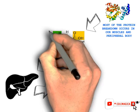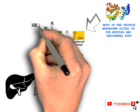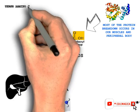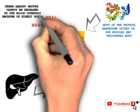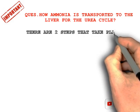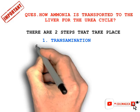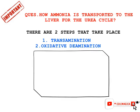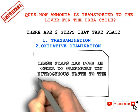Now, these nitrogen-containing amino groups cannot be released into our blood directly, because free ammonium ions are highly toxic for our body. So there exists a way to transport this nitrogen waste to the liver without converting it into its ionic form. This is a very important concept: how ammonia is transported to the liver for the urea cycle. There exists a two-step process that takes place before the urea cycle. The first step is transamination, whereas the second step is oxidative deamination. These steps are done in order to transport the nitrogenous waste to the liver without releasing it freely in the blood.